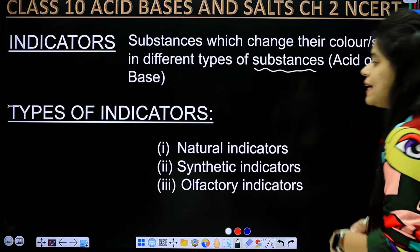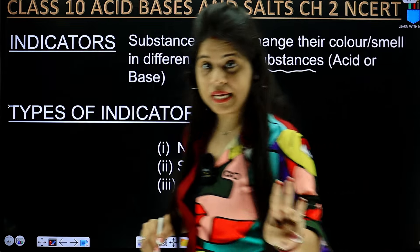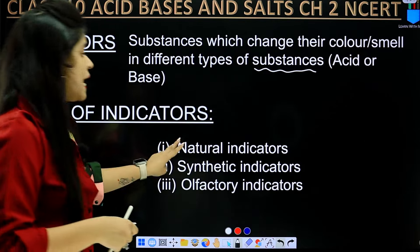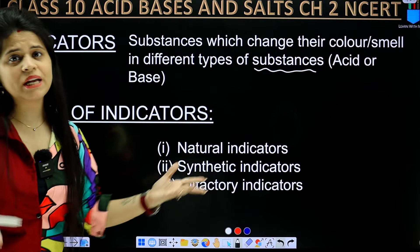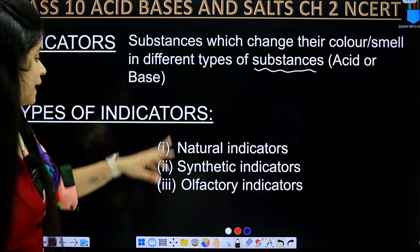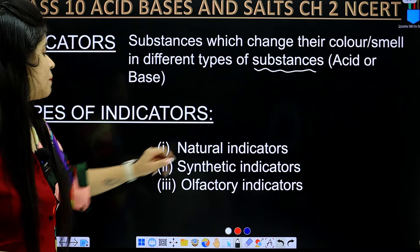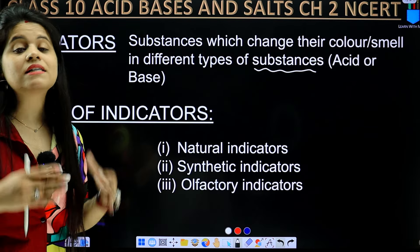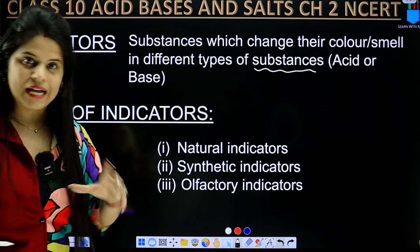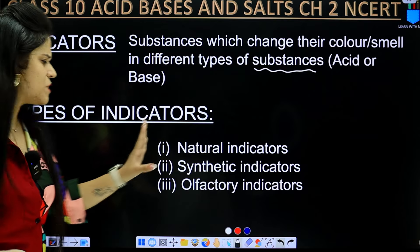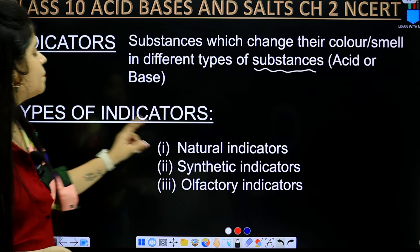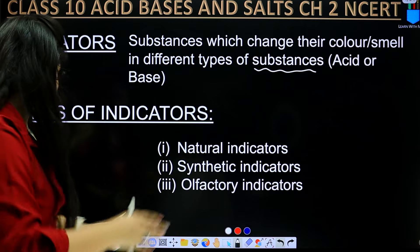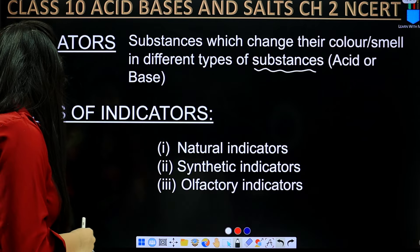Now, types of indicators. We will discuss three types of indicators here. One is natural indicators — which nature gives us. Second is synthetic indicators — which we make chemically. Third is olfactory indicators — which are also very basic. So let's discuss.